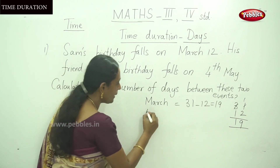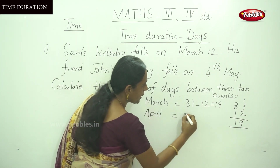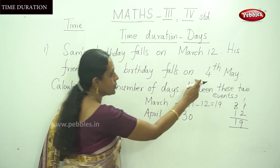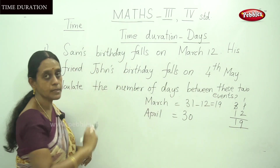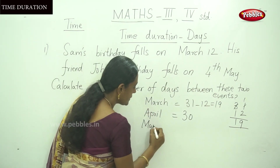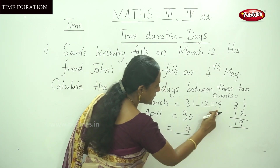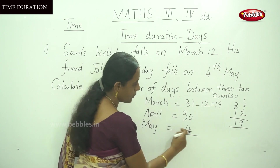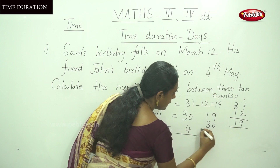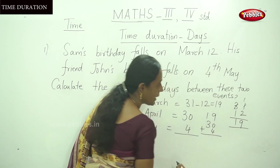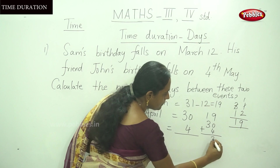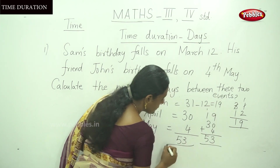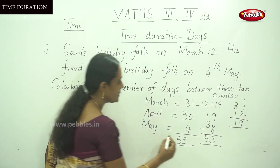And April — the number of days for April is 30. And May has 4 days, because 4th May is John's birthday. So add these numbers: 19 plus 30 plus 4. That is 53. So the answer is 53 days.